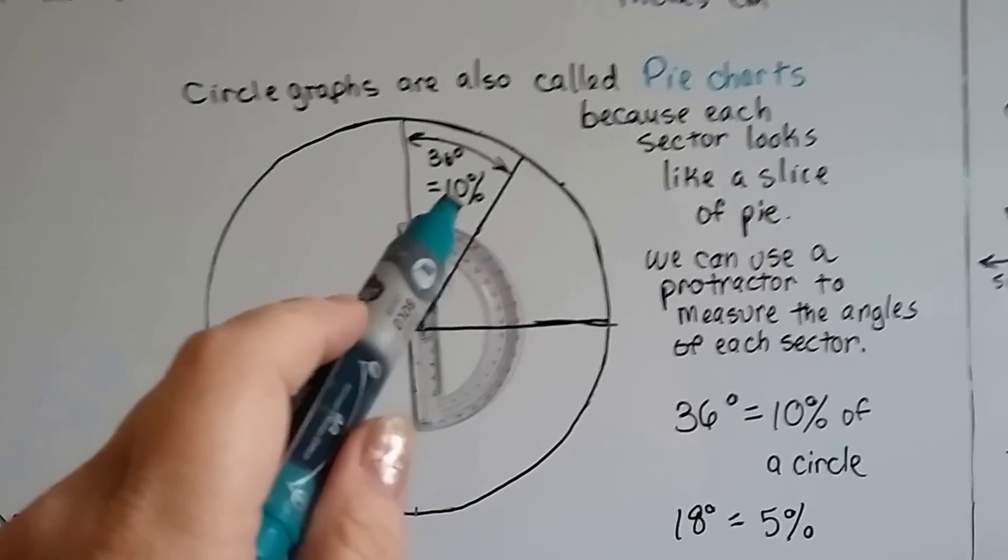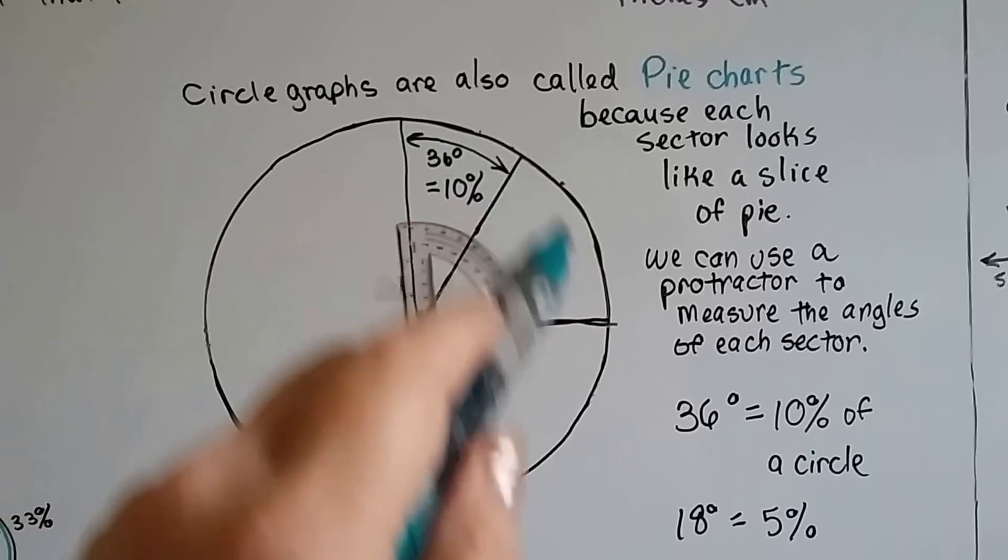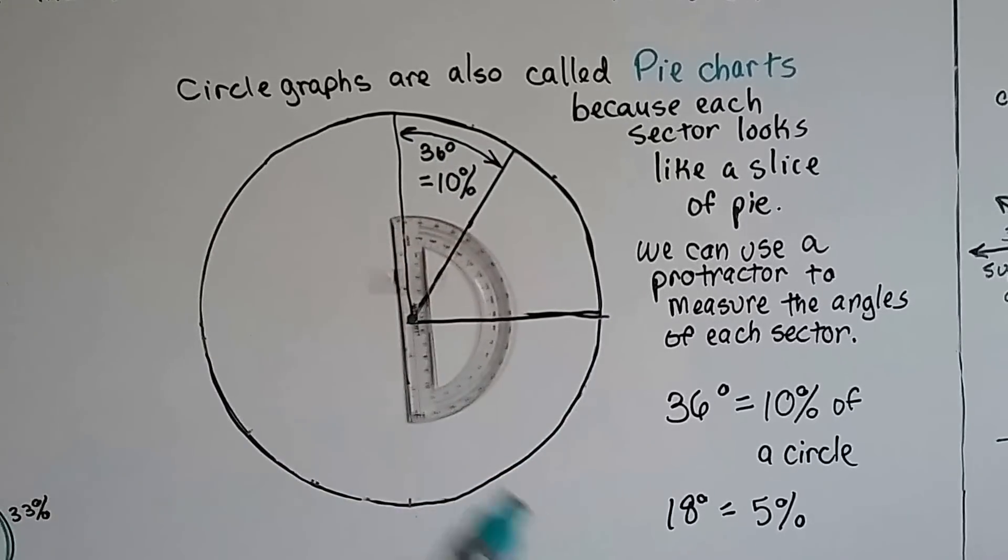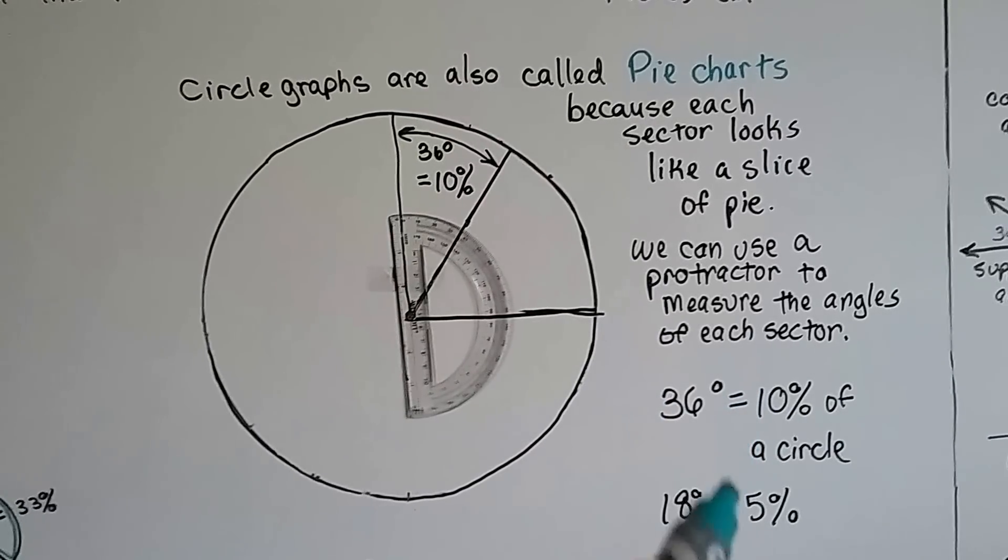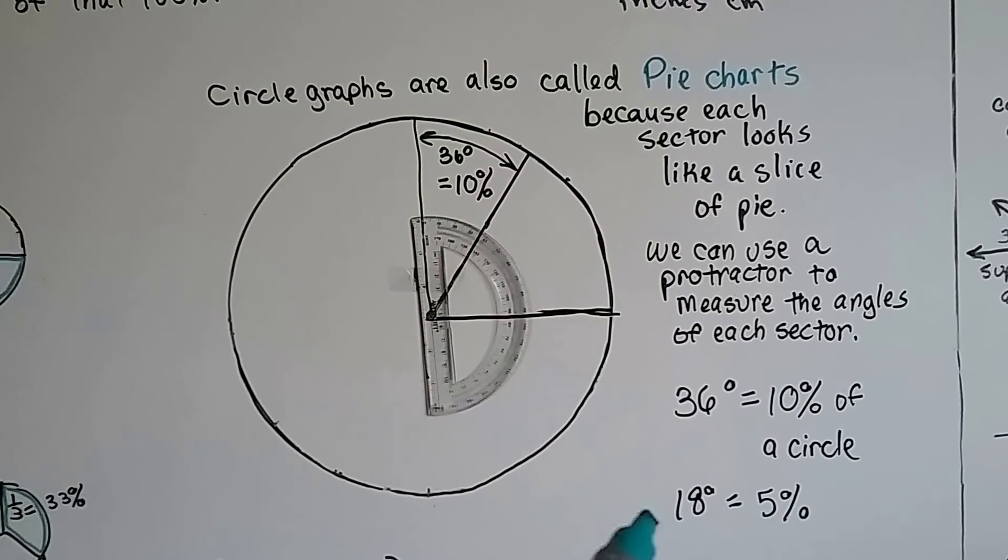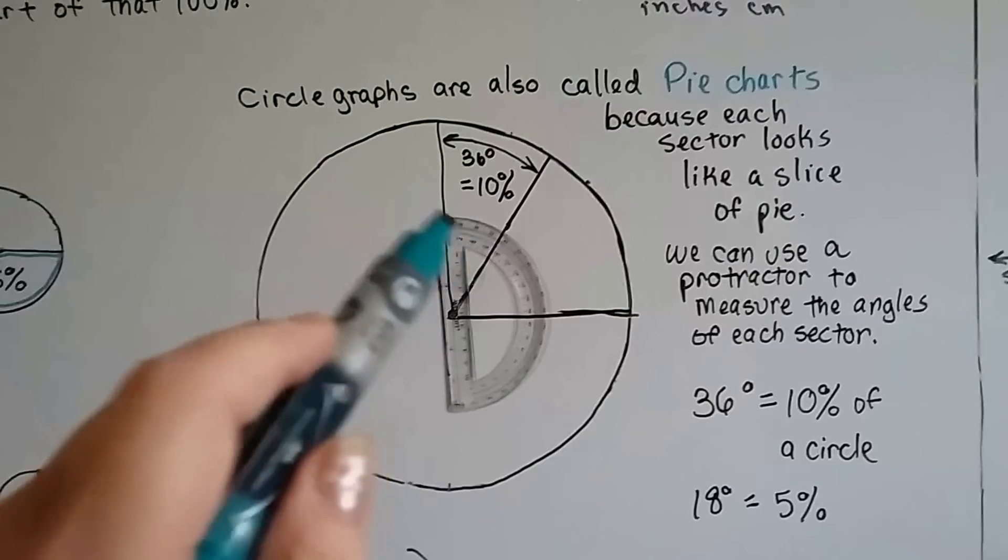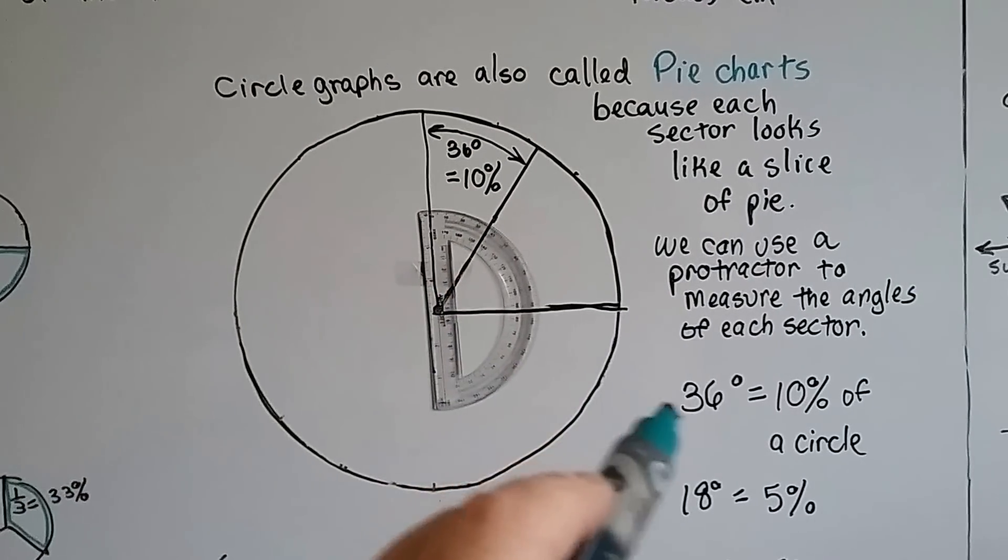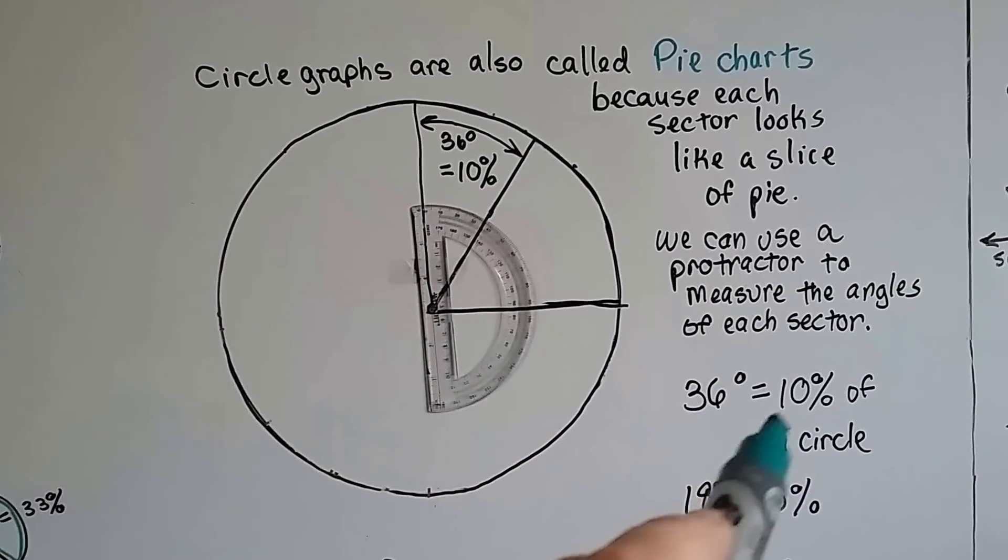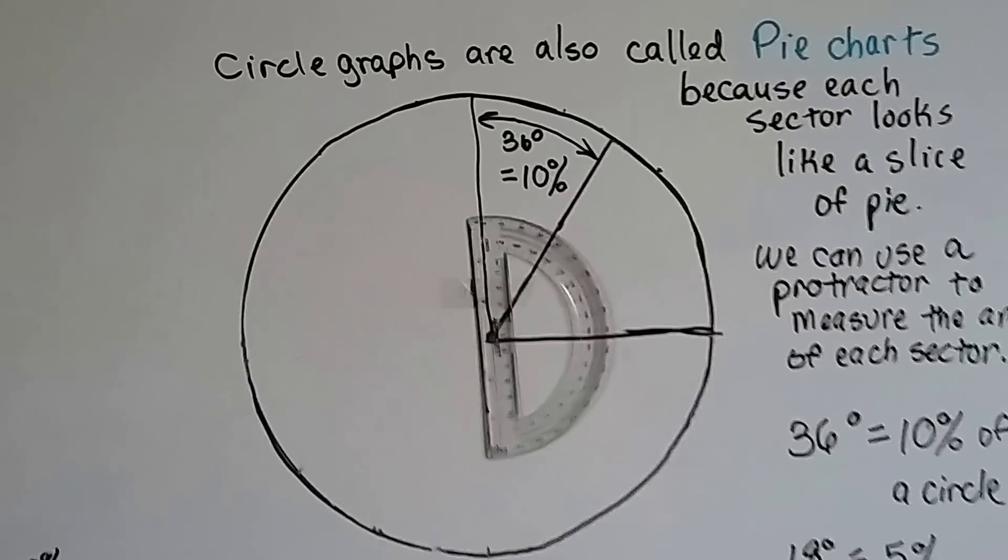36 degrees is 10% of the circle. Half of 36 is 18. Half of 10 is 5, so we know 18 degrees is 5%. If you wanted to make your own circle graph, you could use a protractor and know that each 5% is 18 degrees and each 10% is 36 degrees.